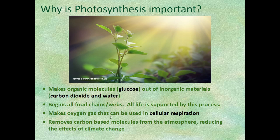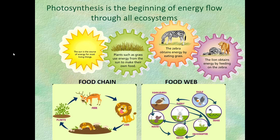Photosynthesis is the beginning of energy flow through all ecosystems. It starts with the Sun — a plant absorbs sunlight and uses it to build its structures and make its own food. If the plant had its way, there would just be plants, sunlight, and decomposers: when plants die, they decompose, and new plants grow in their place, creating a constant nutrient cycle. But along came animals, and animals eat plants.